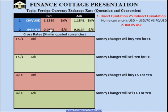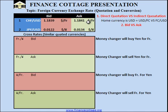Regarding the ask price, it is the price at which the foreign currency seller will sell the base currency. For example, 1.1841 dollars per franc means the foreign currency seller will sell one Swiss franc for 1.1841 dollars. Similarly, the foreign currency seller will sell one yen for 0.0134 dollars. So that is the difference between the bid and the ask price.